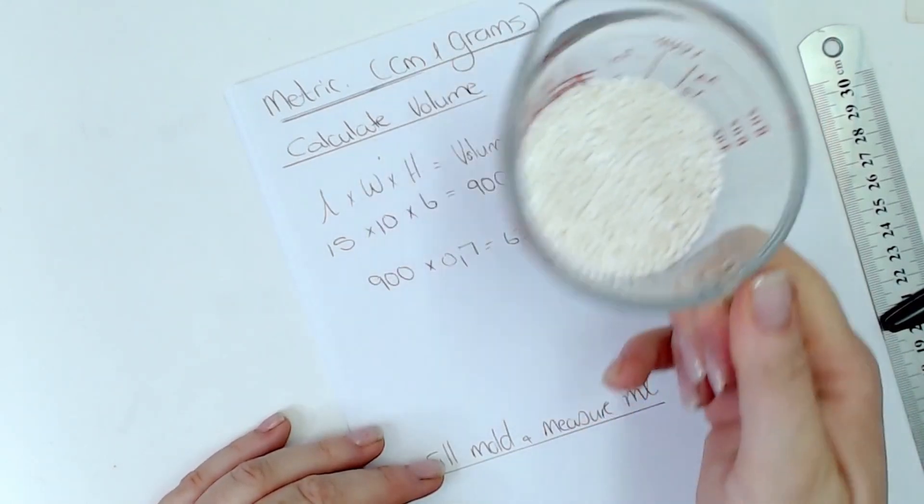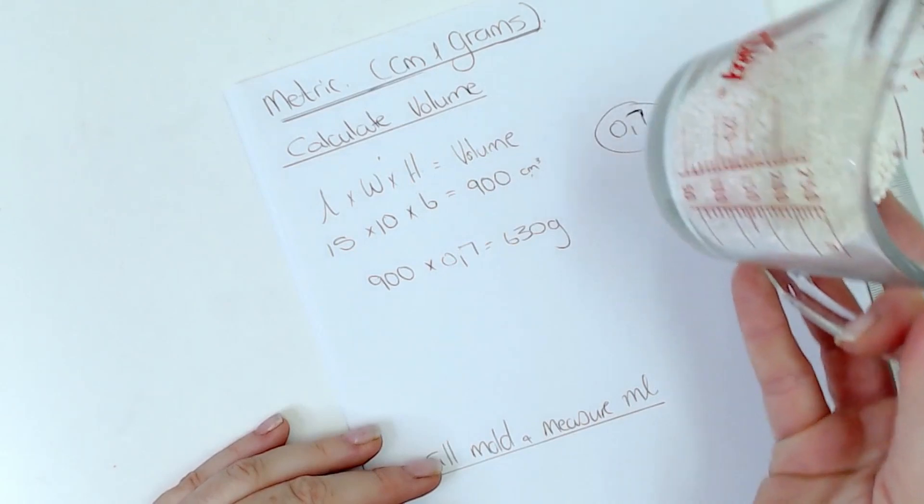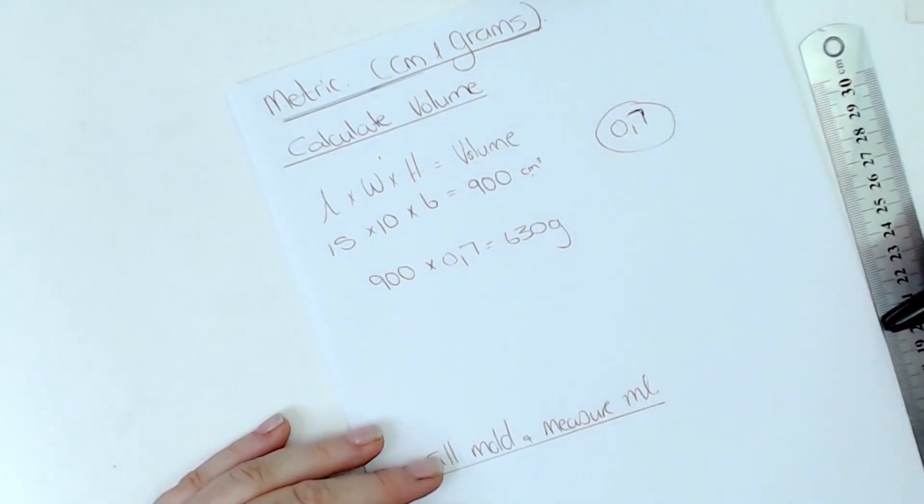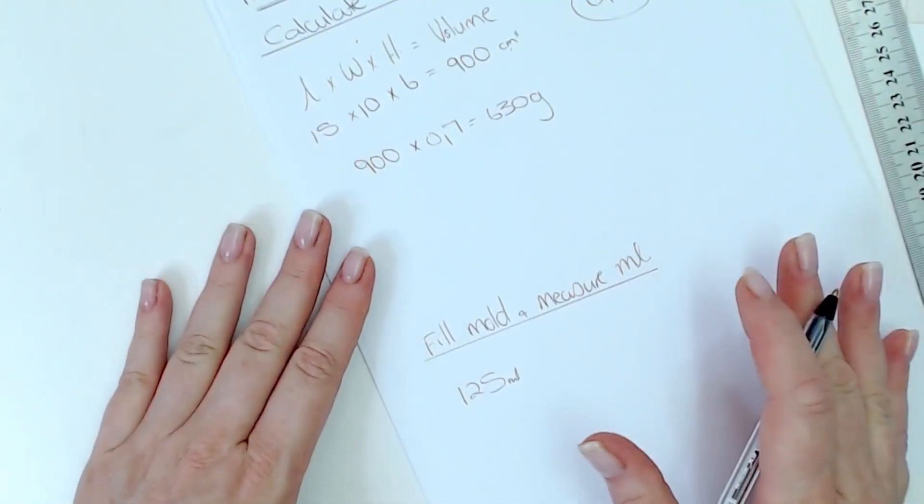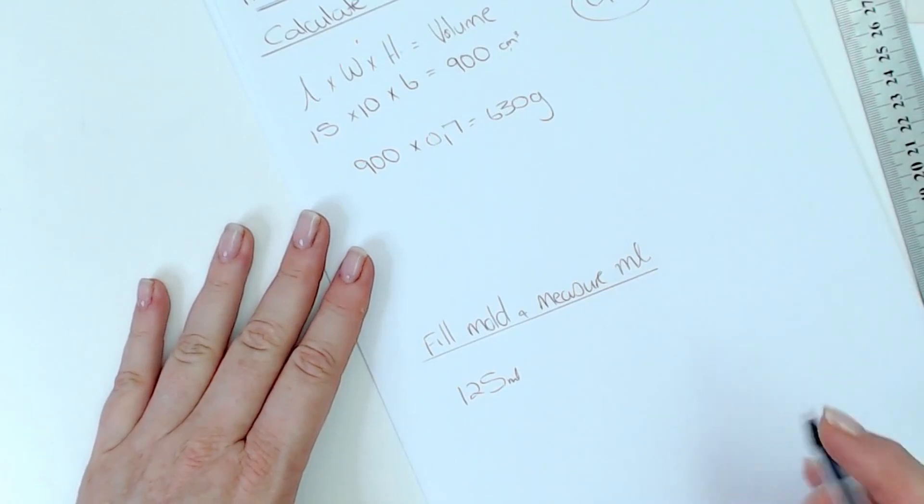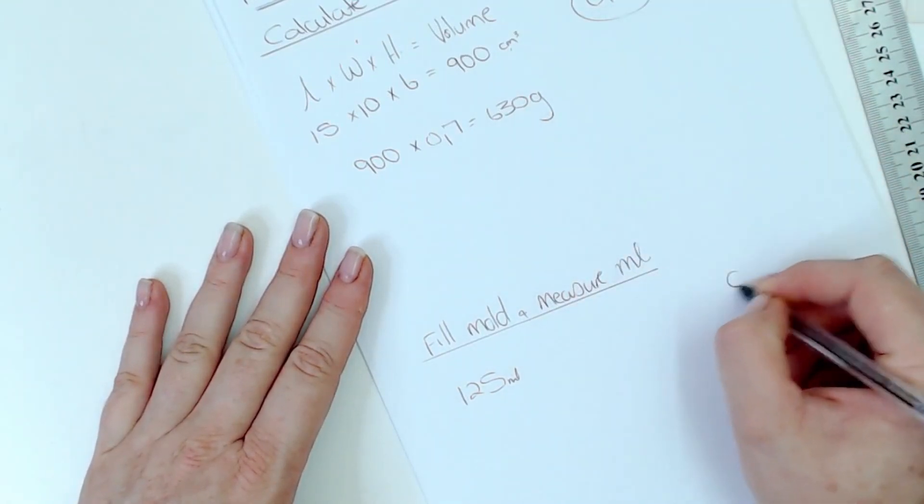Just shake it down gently and for this one is 125 milliliters. So what I'm going to do here is I'm going to take the 125 milliliters that I found here and I am going to use the same 0.7 factor here.